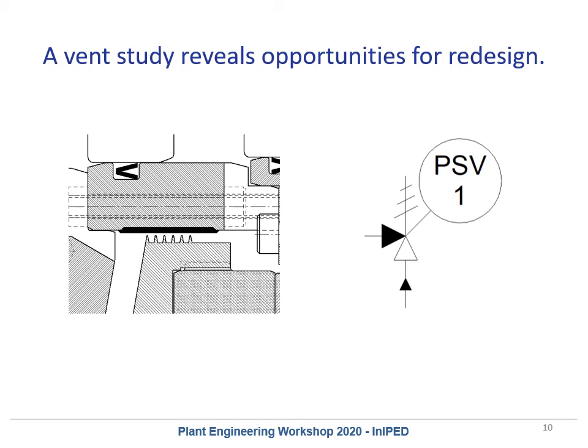Adding things like intermediate labyrinths doesn't dramatically reduce the total flow rate out of a compressor. An intermediate labyrinth does dramatically shift the percentage of flow that goes out the primary vent compared to the secondary vent, but it doesn't have a significant impact on pressures. Similarly, gaps in the carriers or restricting the primary vent porting can have other really negative consequences.